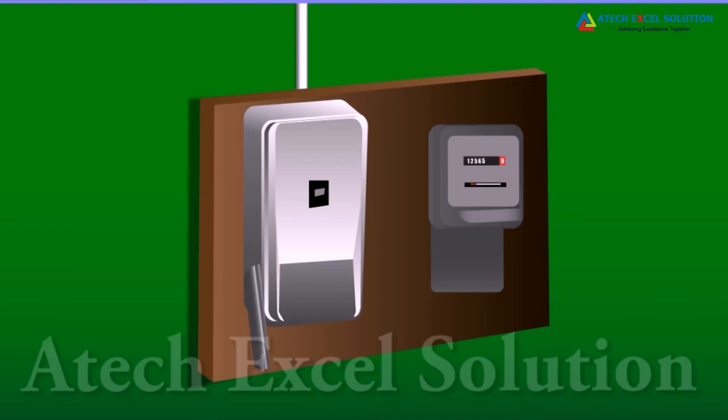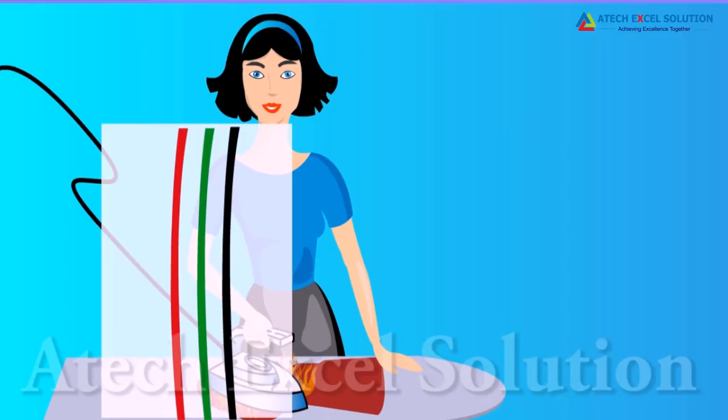In our home, we receive supply of electric power through a main supply, supported through overhead poles or underground cables. In the supply wire, wire with red insulation cover is called live wire or positive. The other one is of a black insulation, which is a neutral wire. The potential difference between the two is 220 volts.